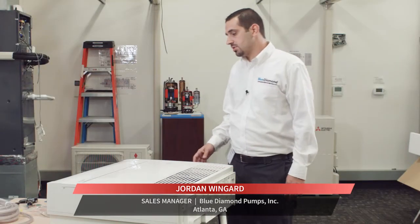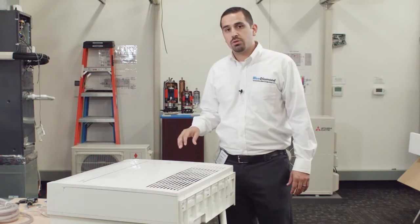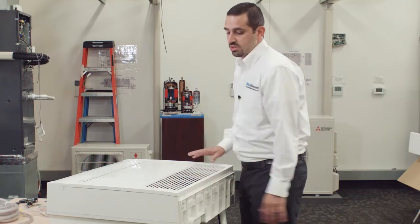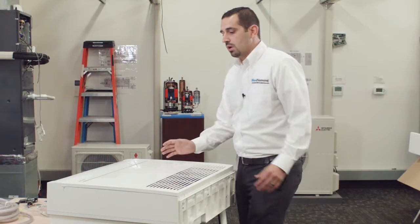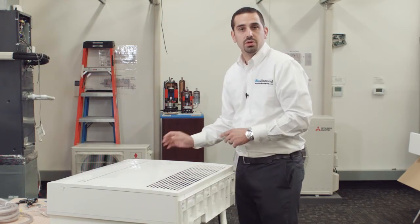We're going to get started installing the micro blue on this Mitsubishi floor mount unit. We've got to get rid of these plastic pieces, so we're going to take off this front cover, then we'll take off the rest of this plastic which will expose the electrical we need to get to.